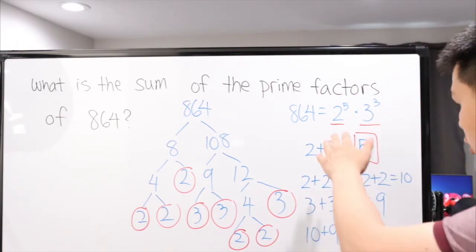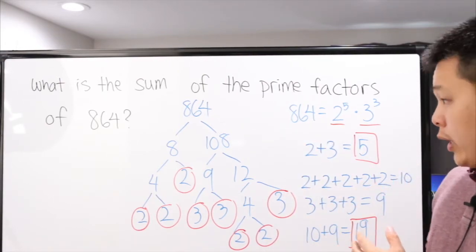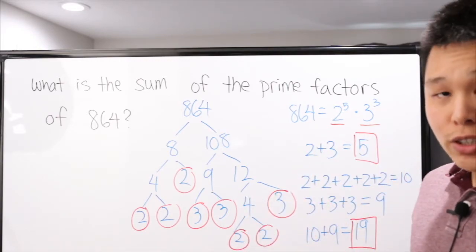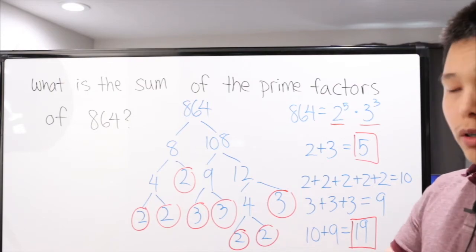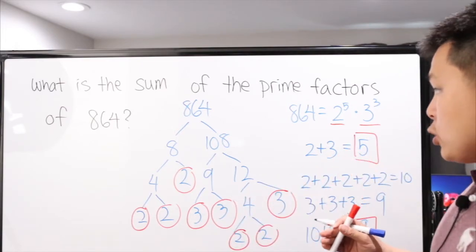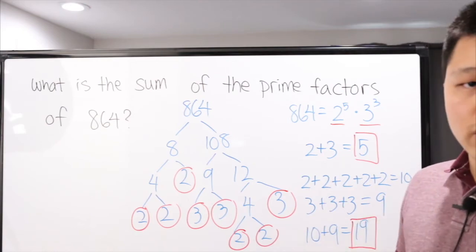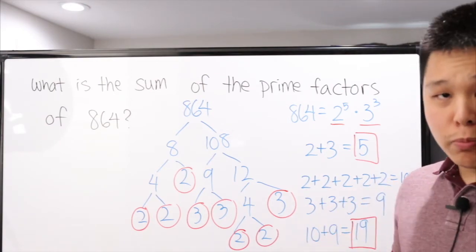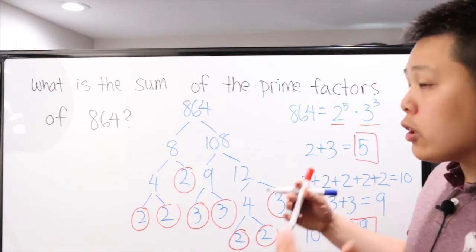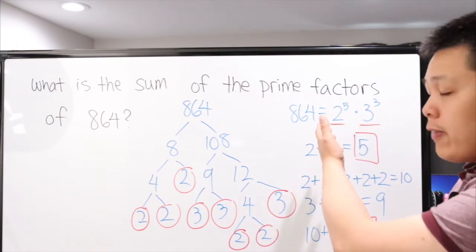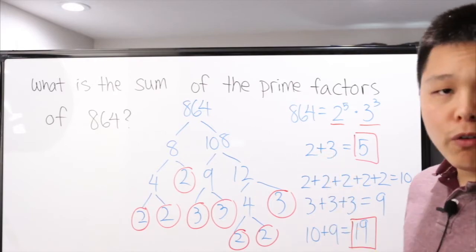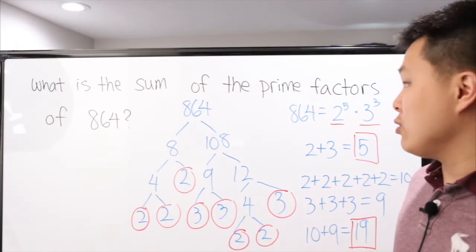So now we have two possible answers: 5 assuming unique prime factors, and 19 assuming all prime factors added together. When you encounter a problem like this on a standardized test, you're in luck because the multiple choice options will probably have one or the other. If it's a free response, you can ask the person who designed the problem or the proctor whether they want unique prime factors or the sum of all prime factors. If not, put both answers and cross your fingers.